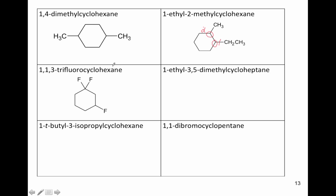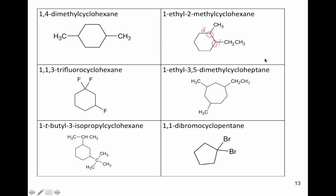1,1,3-trifluorocyclohexane is a good example because it reminds us there are actually two positions on each corner — so two fluorines can be on the same carbon. A common mistake is writing FL instead of just F — make sure it's only F. The last example, 1-t-butyl-3-isopropylcyclohexane, uses common names: isopropyl and t-butyl groups from earlier in your notes. This shows how common names can appear in IUPAC nomenclature.